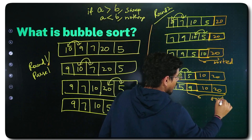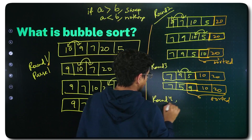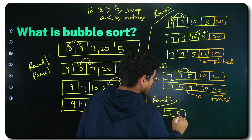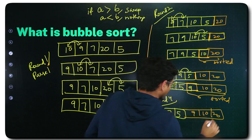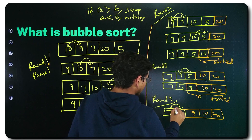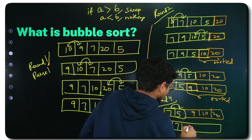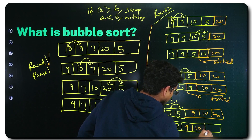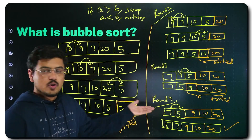9 reaches its correct place — round 3 places the third largest element at its correct position. This portion is sorted. In round 4, you just need to check 7 and 5. 7 is greater than 5, so you swap. You get 5, 7, and then the full sorted portion — the whole array is now sorted in four rounds.